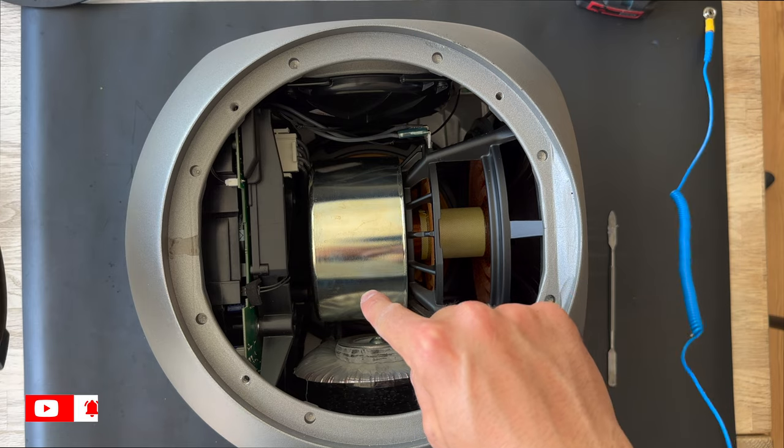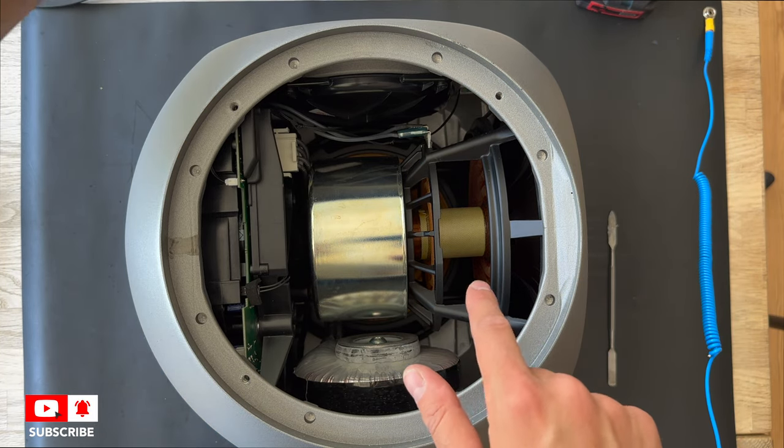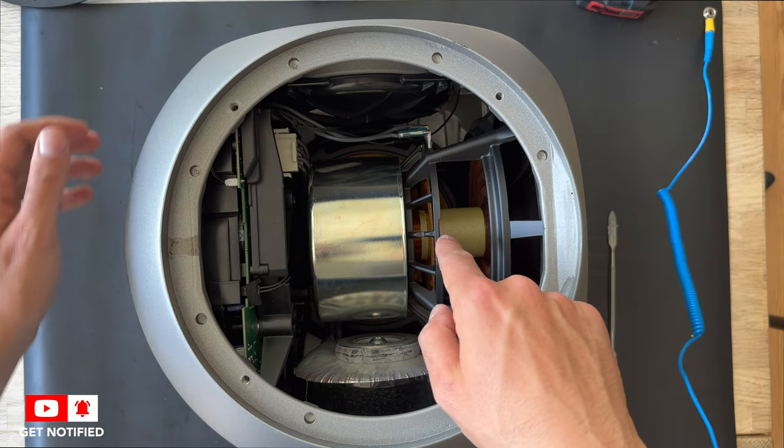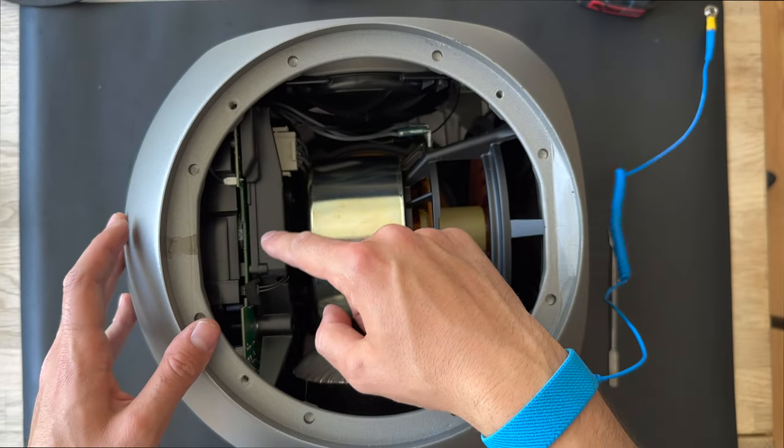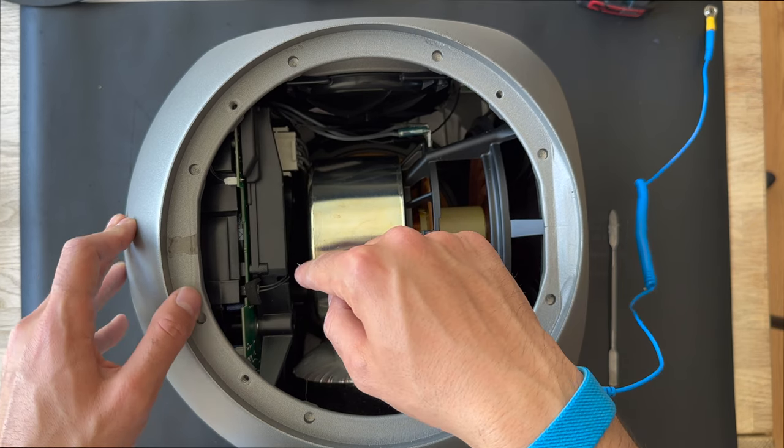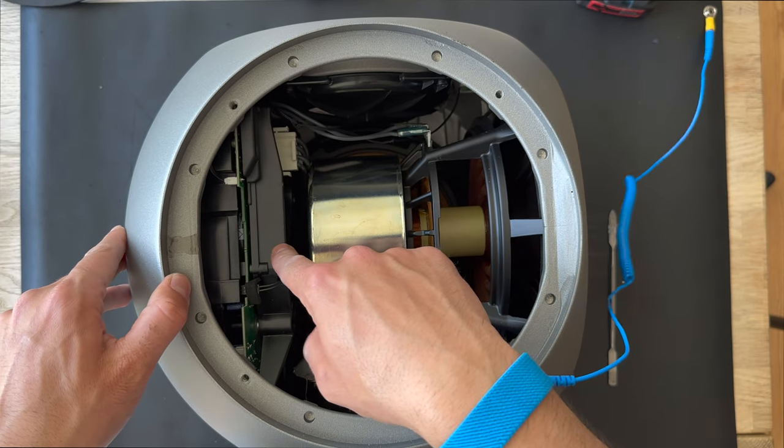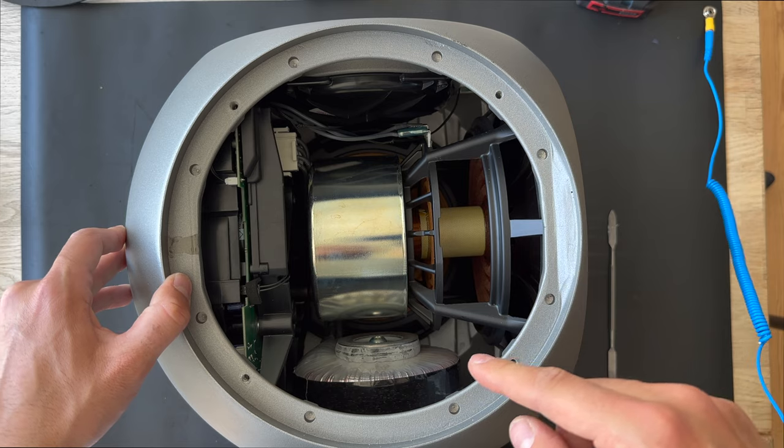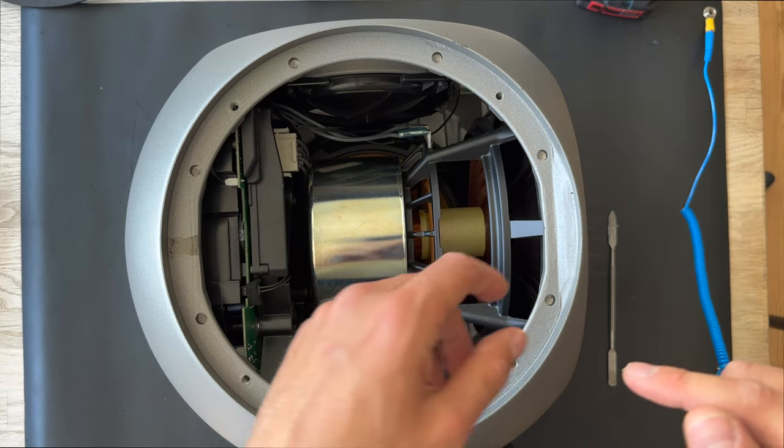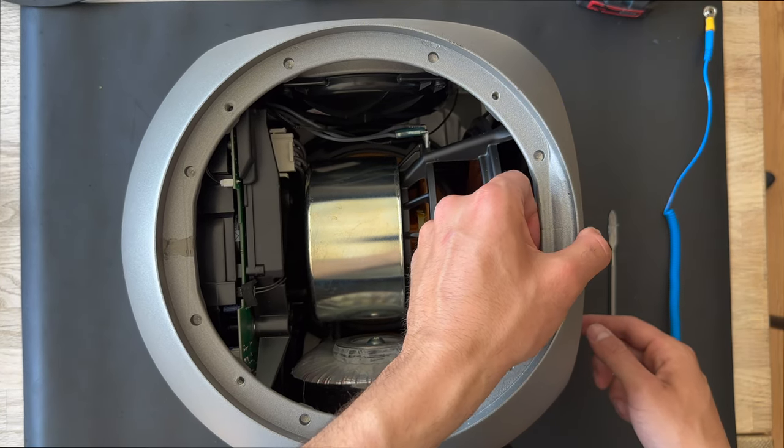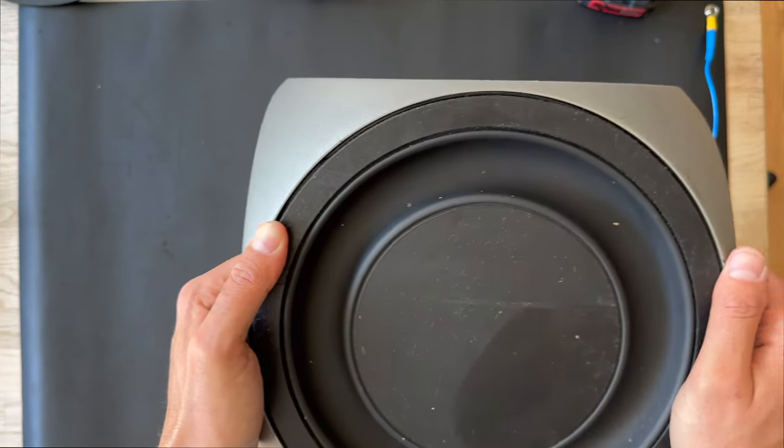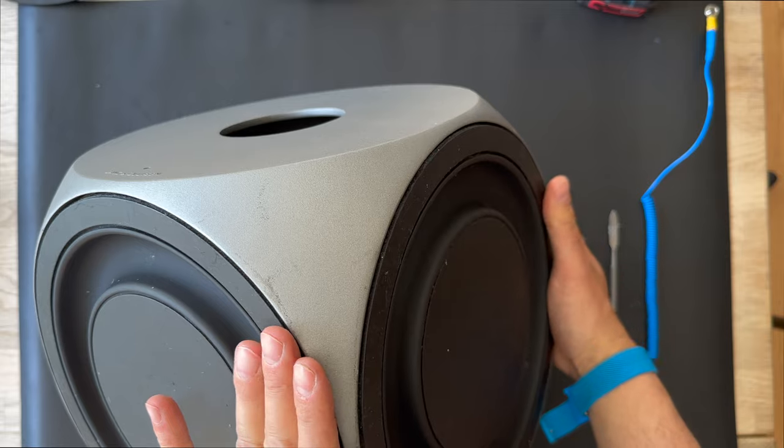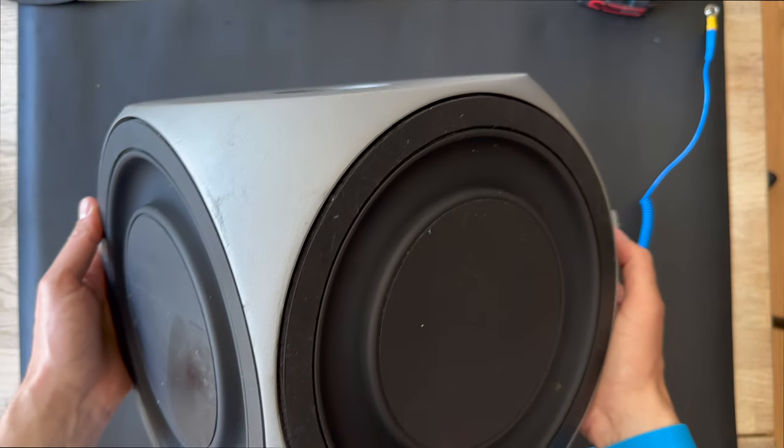So inside the BeoLab 2, we have the big bass unit, and we have the power transformer here and the big modules, the power amplifier and the power supply board. So the next step will be rolling the BeoLab 2, and let's try to remove the other passive radiator.